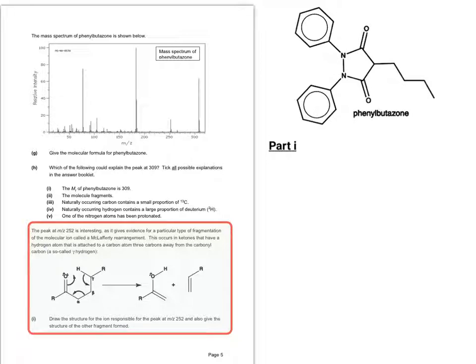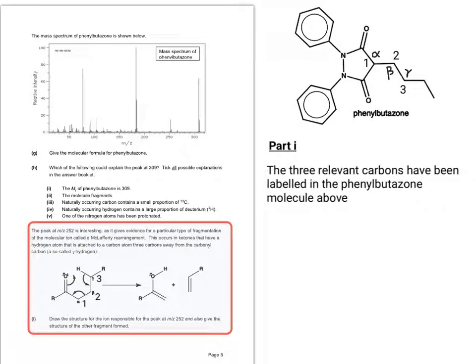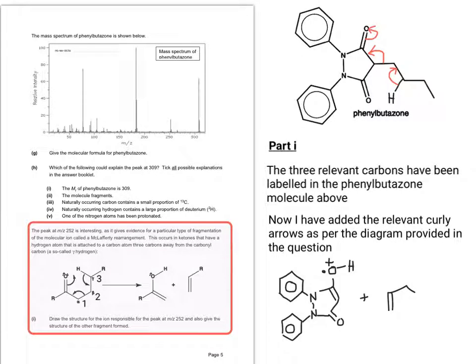So this next part introduces something called the McLafferty arrangement. What happens is you get a fragmentation and a molecular ion is created that only occurs when there's a ketone group that has a hydrogen atom that's attached to a carbon three carbons away from the carbonyl carbon. So let's look at this next part, part I. It introduces something called the McLafferty arrangement. So you need to think about three carbons away from the ketone group. So I have labelled them according to the diagram in the question. And now what I'm going to do is put in the curly arrows so you can see what's going on in terms of electron transfer.